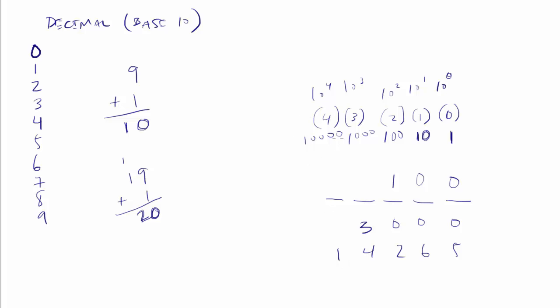So if we take 10,000 plus 4000 plus 200 plus 60 plus 5, that is our number—14,265 things.